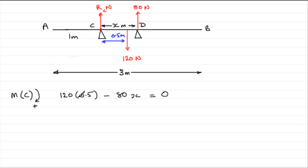So all we need to do now is just solve this equation. Well 120 times 0.5 is 60. And if I add 80x to both sides, I get that 60 equals 80x. And if I divide both sides now by 80, we get that x equals 60 divided by 80. And 60 divided by 80 is 3 quarters or 0.75. So we have that x is 0.75. So the distance between C and D is 0.75 metres.